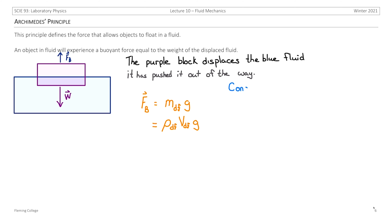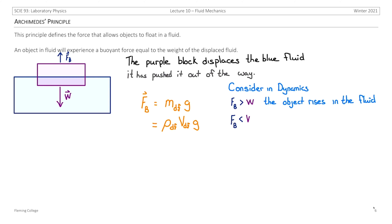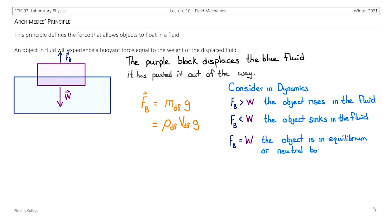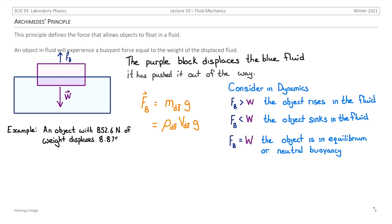Let's compare net forces to understand the dynamics. If the buoyant force is greater than the weight of the object, the net force is positive and the object rises in the fluid. If the buoyant force is less than the weight, the object sinks. If the buoyant force equals the weight, the object is in equilibrium — what we call neutral buoyancy. Consider an object with 852.6 N of weight that displaces 8.878×10⁻² m³ of water. Will it sink or float? We calculate the net force: buoyant force equals 1,000 kg/m³ times the displaced volume times g, minus the weight. The result is a negative net force, meaning the object sinks.